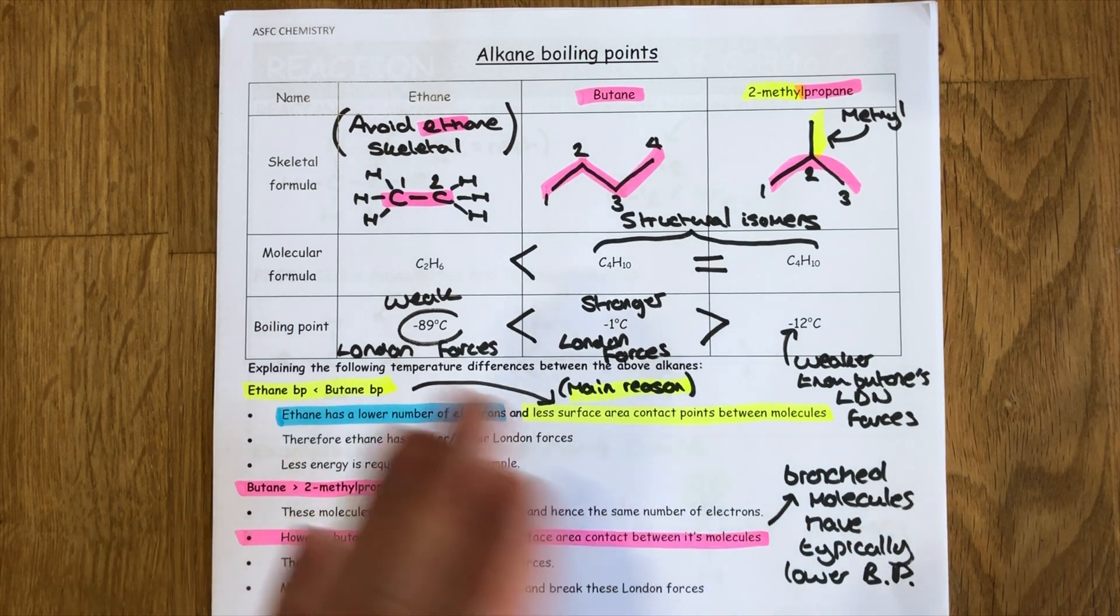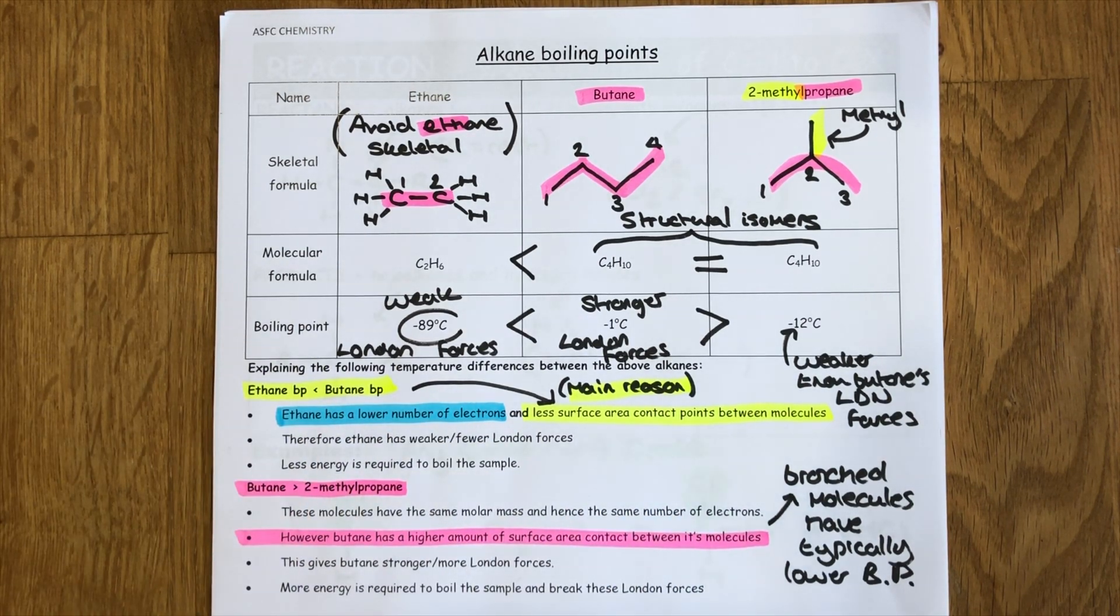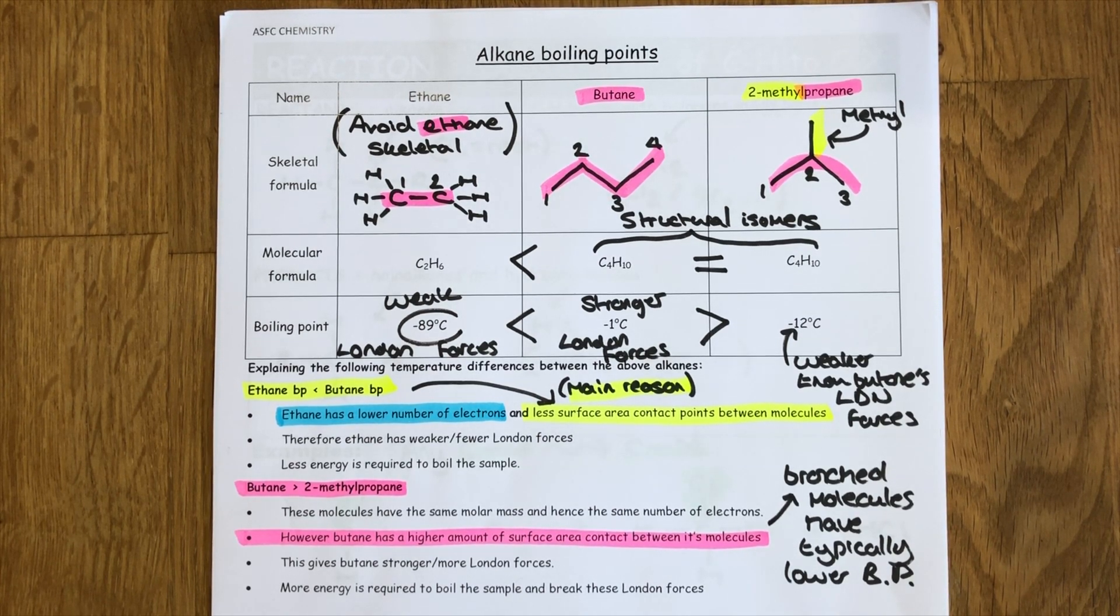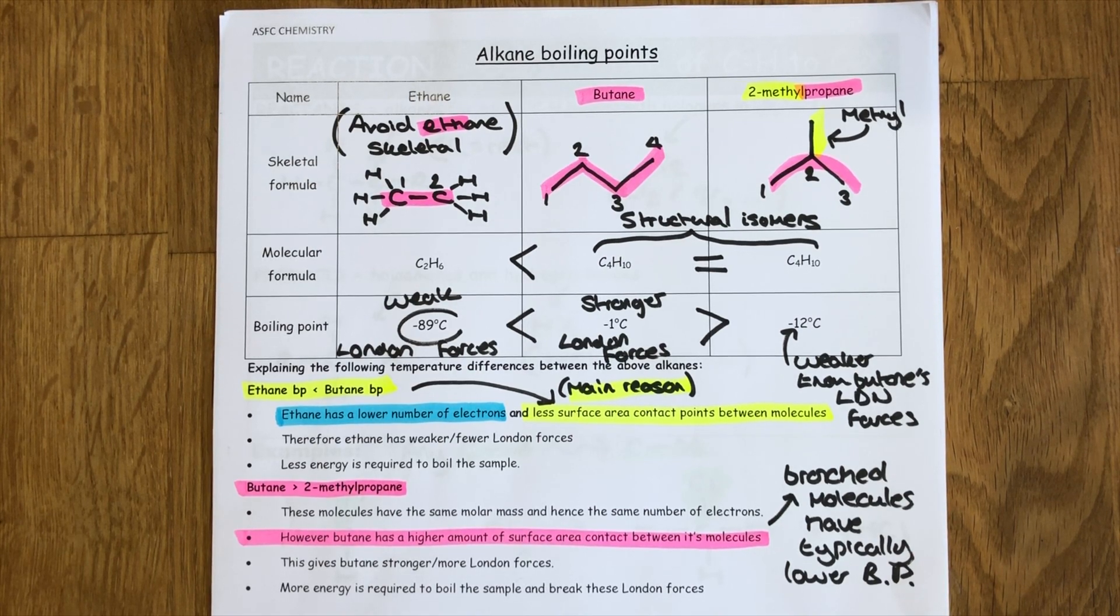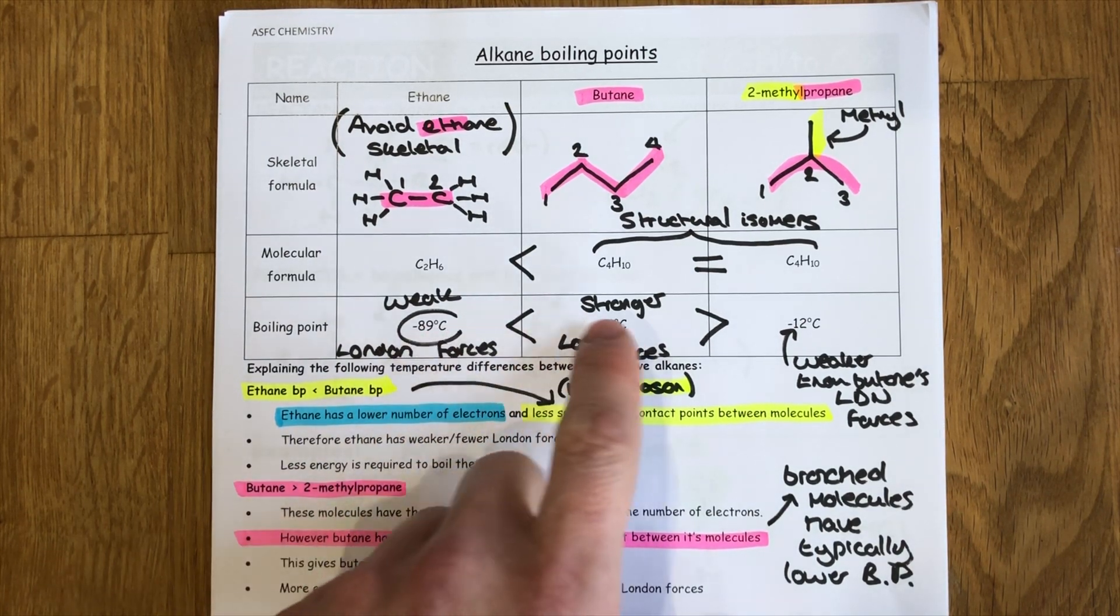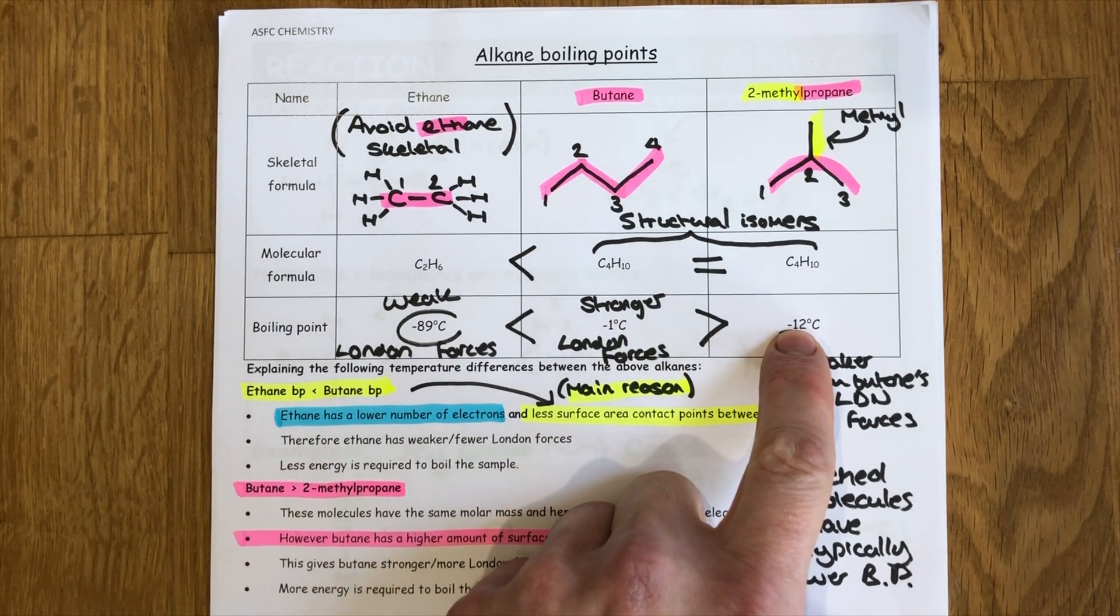All organic substances fall into the category of the simple molecular lattice structure and so what that means is when we melt or boil these we aren't breaking any bonds at all, we're breaking intermolecular bonds. For alkanes those are London forces.